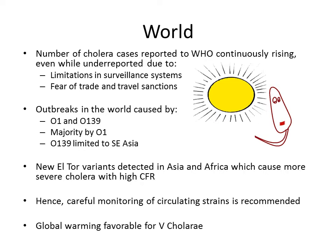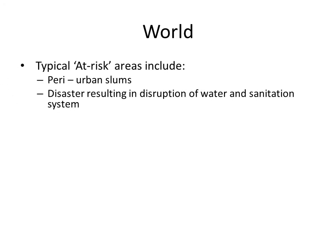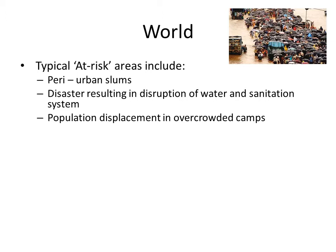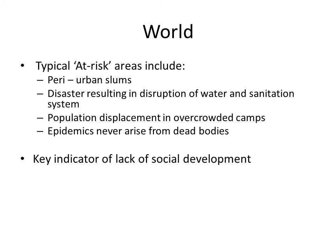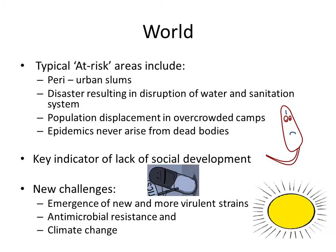Global warming has been reported to be favorable for Vibrio cholerae spread. Typical high-risk areas include peri-urban slums, disasters resulting in disruption of water and sanitation systems, and population displacement in overcrowded camps. Epidemics never arise from dead bodies. Cholera incidence remains a key indicator of social development or its lack. New challenges for control of cholera include emergence of new and more virulent strains, antimicrobial resistance, and climate change.